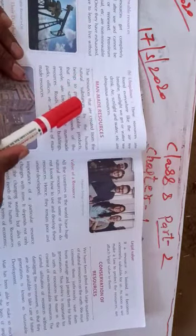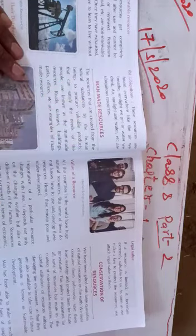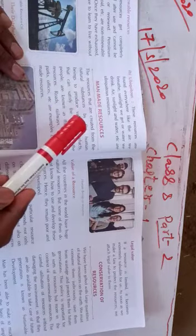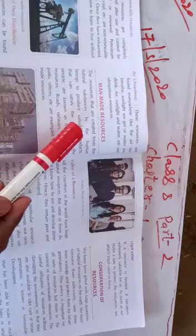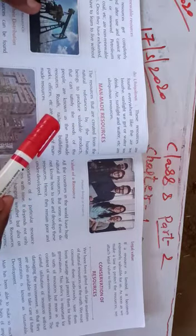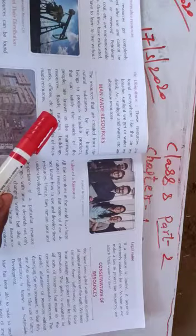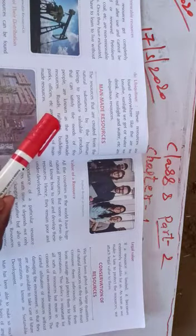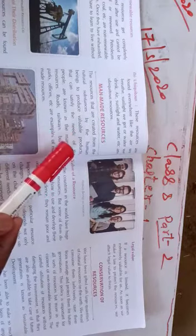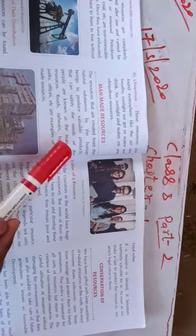The resources that are created from natural substances by human beings to produce valuable products are called man-made resources. Waisi sanshadhan jisko manushya dwara prakirtik padartho se apni zaroorat aur shakti ki purti karne ke liye banaya jata hai, waisi sanshadhan ko hum log man-made sanshadhan kehte hain - jaise ki sadak, railways, buildings, parks, offices, etc.